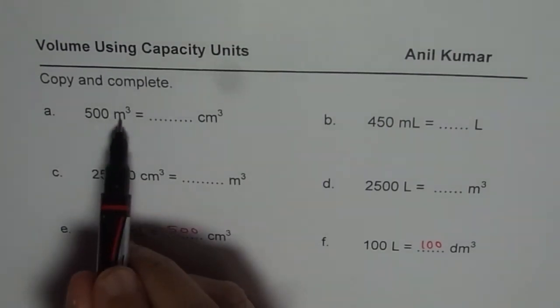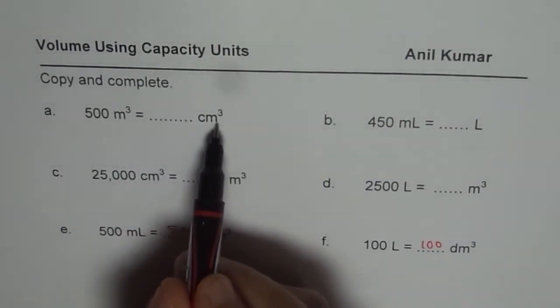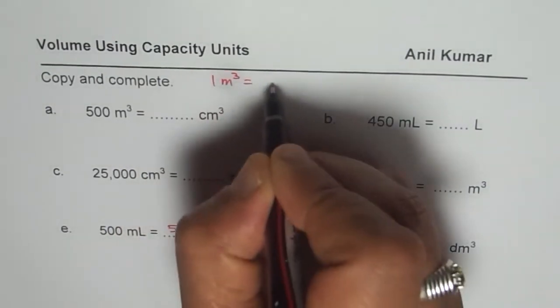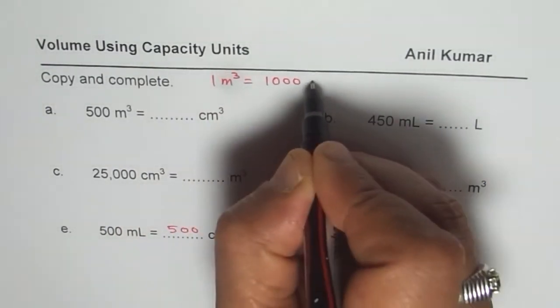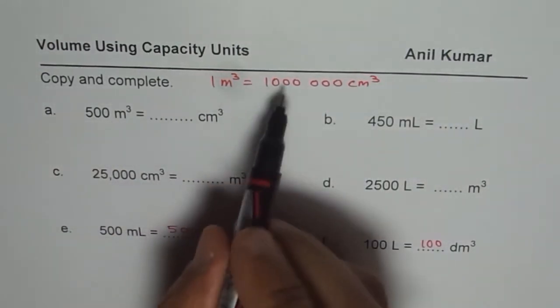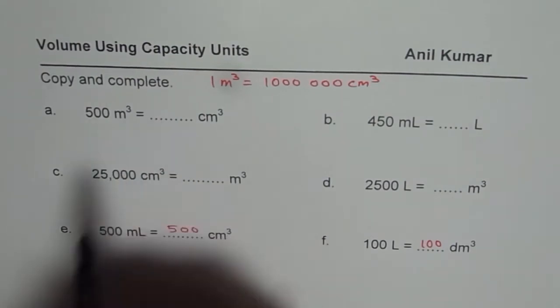As far as the meter cube and centimeter cube is concerned, what is the relation? One meter cube is equals to one million centimeter cube. So you have to multiply this by one million to get this answer.